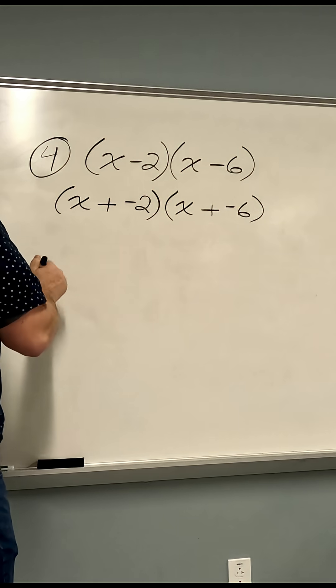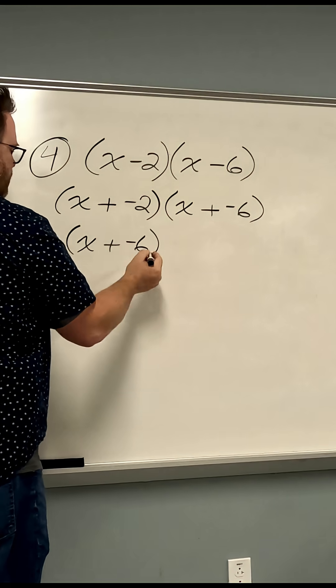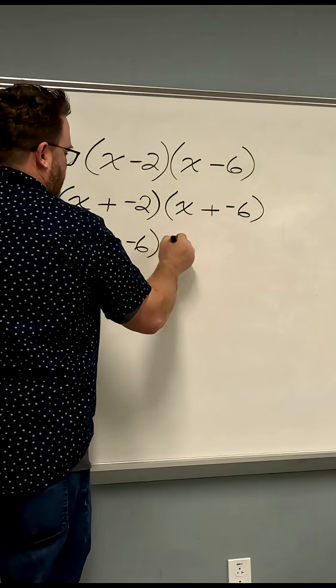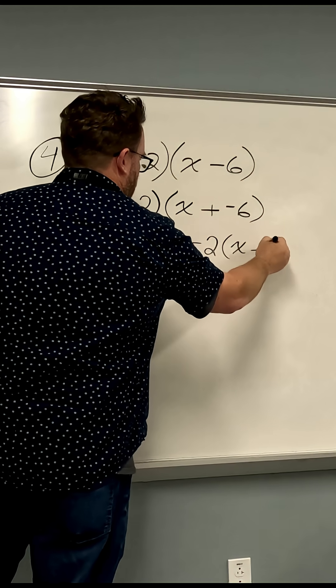I'll then split apart these two terms. So I have x times x plus negative 6, plus negative 2 times x plus negative 6.